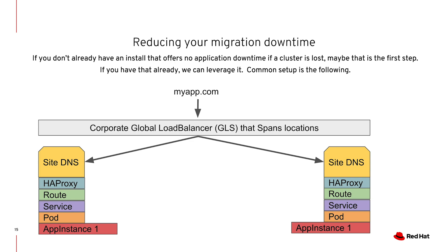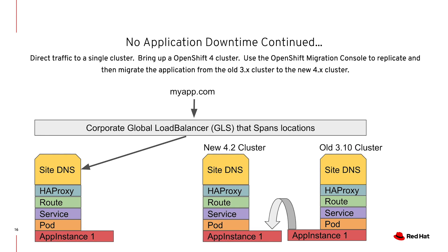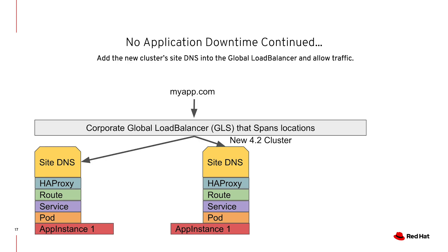Another thing to consider is potentially leveraging a fully HA cluster configuration using a load balancer to help with this migration project. By having multiple clusters load balanced from a global load balancer, this allows you to first remove one of your clusters from your application load balancing configuration, upgrade that application from OpenShift 3 to OpenShift 4, and then reconfigure the load balancer to point traffic to your OpenShift 4 cluster. You then repeat the same approach for all your applications until you have fully migrated.